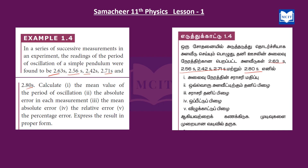The problem asks us to find: first, the mean value of the period of oscillation; second, the absolute error in each measurement; third, the mean absolute error.